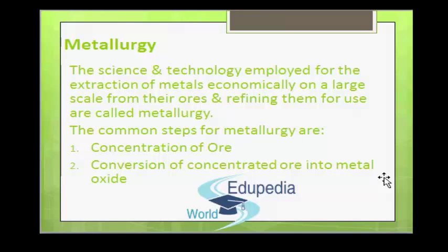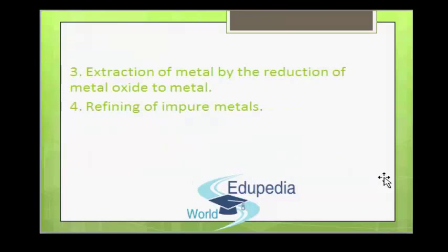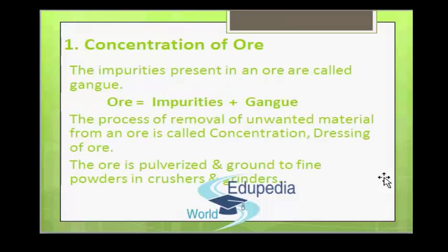The process of extraction of a metal depends on the nature of the ore, impurities present, and physical and chemical properties of the metal to be extracted. No single universal method can be used for all metals. However, the common steps for metallurgy are: first, concentration of ore; second, conversion of concentrated ore into metal oxide; third, extraction of metal by reduction of metal oxide; and fourth, refining of impure metals.